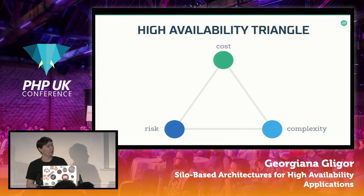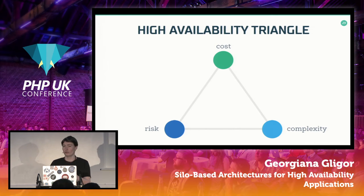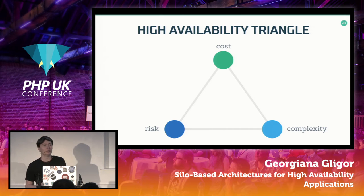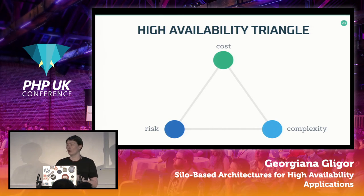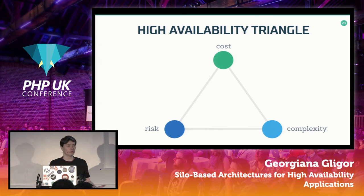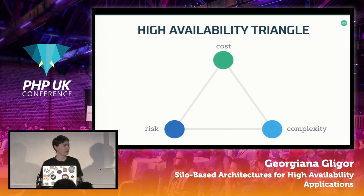Is anyone familiar with the CAP theorem, where a distributed system can only have two of: partition tolerance, availability, and consistency? For high availability, our triangle actually relates to cost, complexity, and risk. The more money we throw at it, the more complex it might become, and it will mitigate some of the risks — but it's a very complex dance with a lot of variables in play.